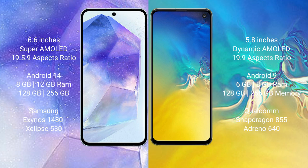The Samsung Galaxy A55 comes with 8GB or 12GB RAM and 128GB or 256GB internal storage, with the Samsung Exynos 1480 processor and Xclipse 530 GPU. The Samsung Galaxy S10e comes with 6GB or 8GB RAM and 128GB or 256GB internal storage, with the Qualcomm Snapdragon 855 processor and Adreno 640 GPU.